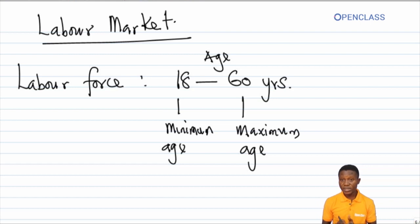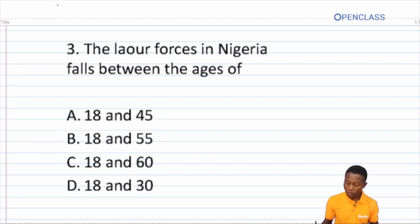Let's go back to the question again. The labor force in Nigeria falls between the ages of A) 18 and 45, that is wrong. B) 18 and 55, that is wrong. C) 18 and 60, and that is the correct answer. So the correct answer is C.